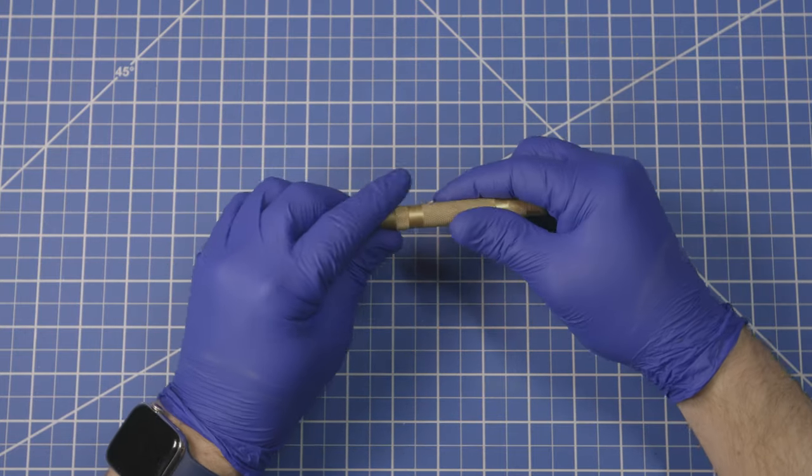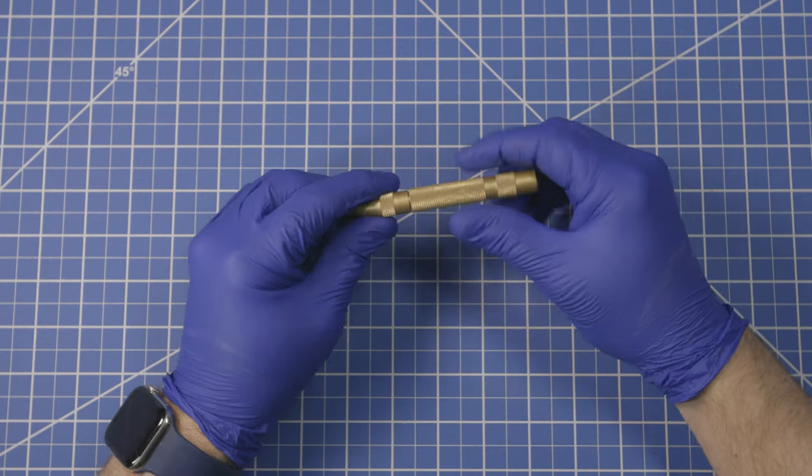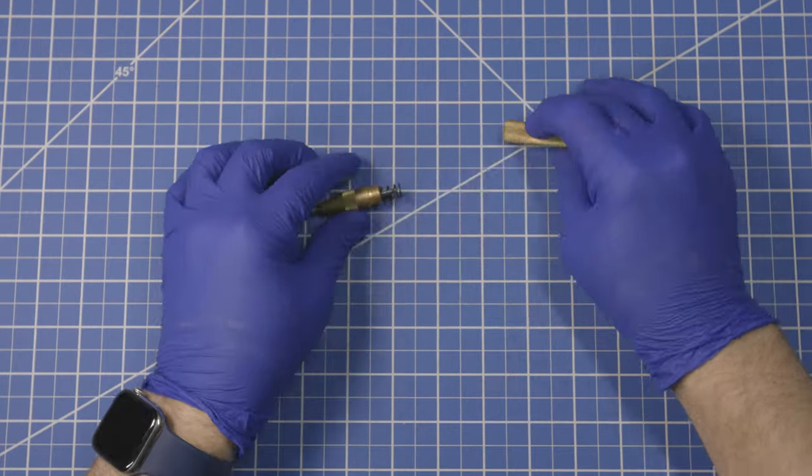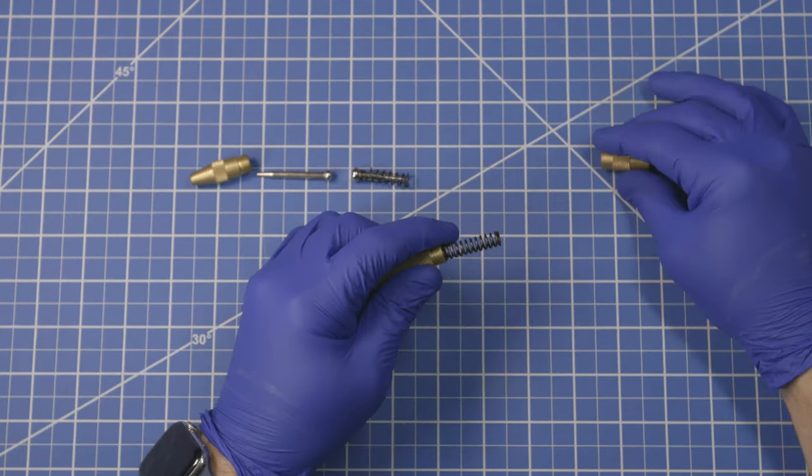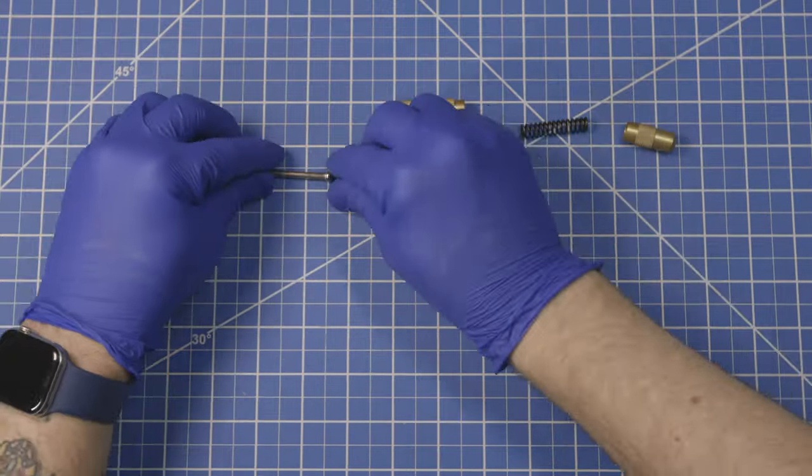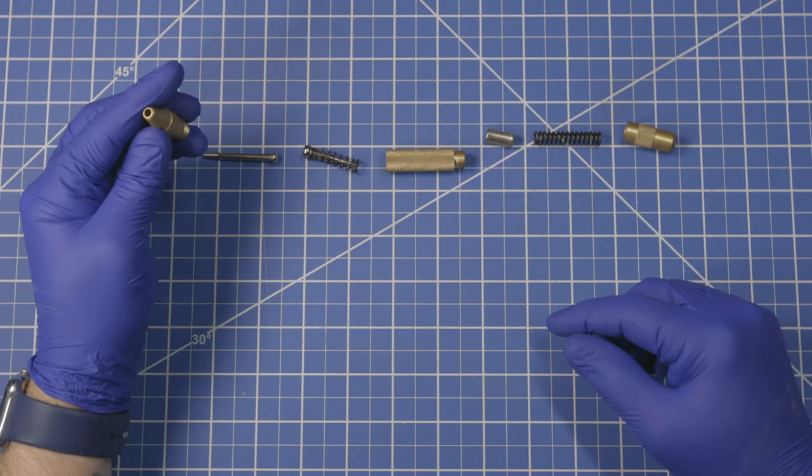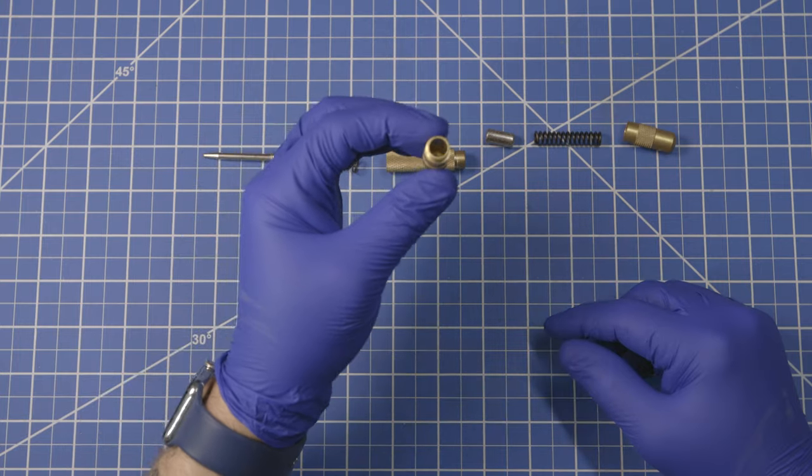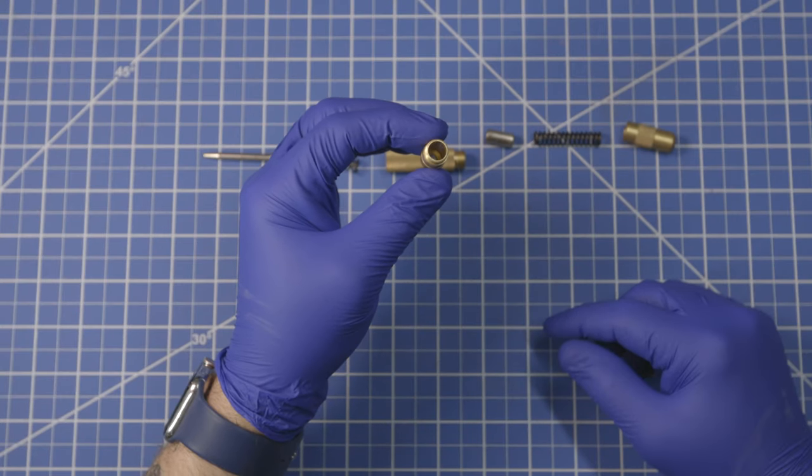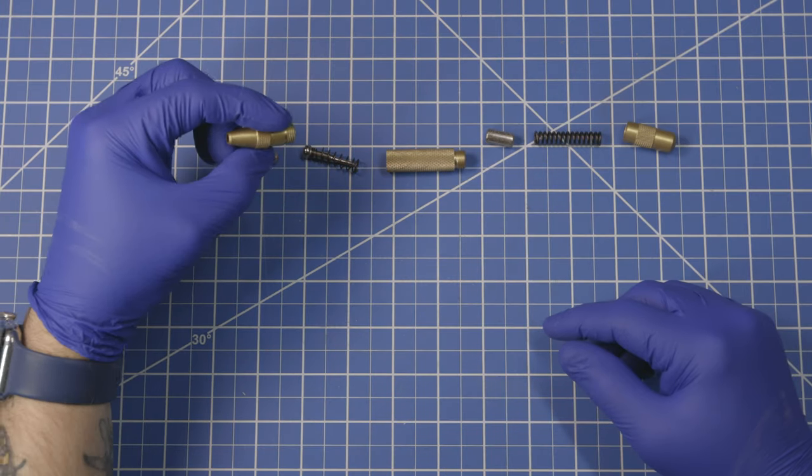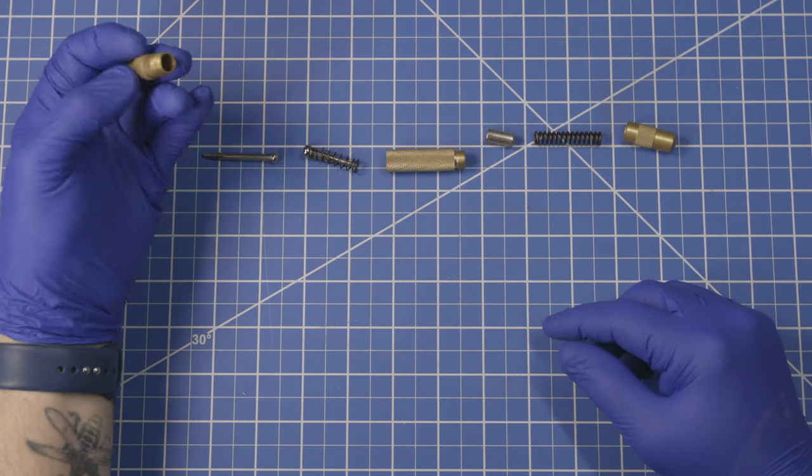So we'll strip it apart. You'll notice that this one has reverse threads for some reason. I don't know. This thing is a guide cap. It has a little ramped mouth there to make sure that this thing is able to be dropped in and aligned pretty easily.